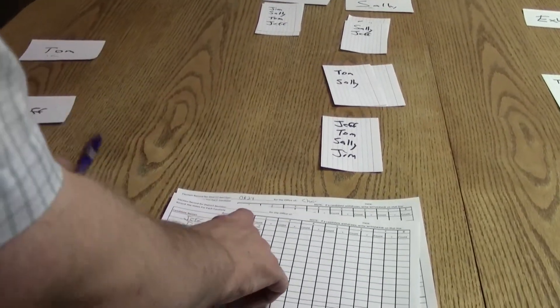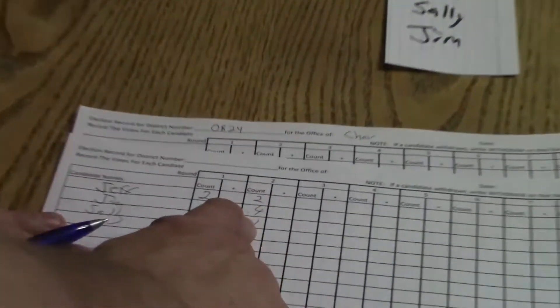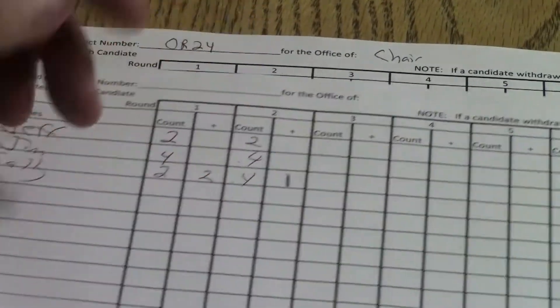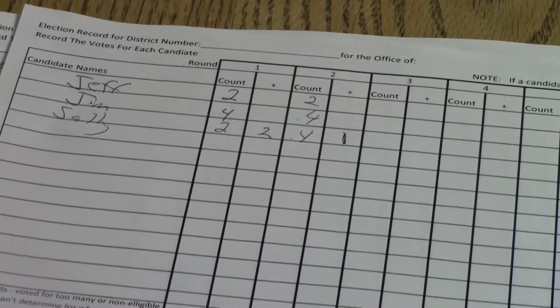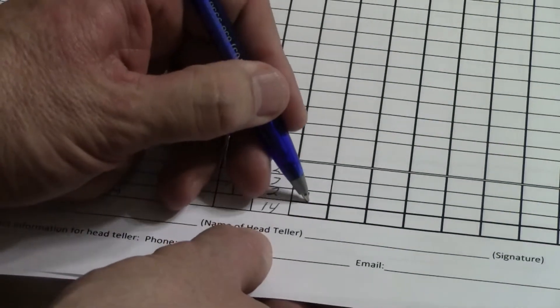So out of the two votes for Jeff, now one of them went to Sally, one of them went to exhausted.